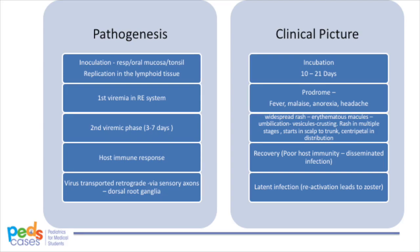Varicella is a highly contagious infection. It is spread from person to person via inhalation of aerosols from vesicular fluid and respiratory secretions. Airborne transmission has been reported, which means that N95 masks, gowns, and gloves are required if the patient is in the hospital. The virus enters via the respiratory or oral mucosa. During the incubation period, the virus travels to lymphoid tissues — most commonly the tonsils — and begins to replicate. The incubation period, defined as the time between exposure and onset of rash, lasts 10 to 21 days.